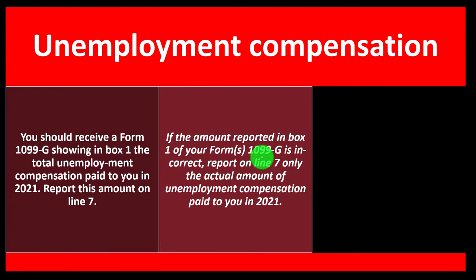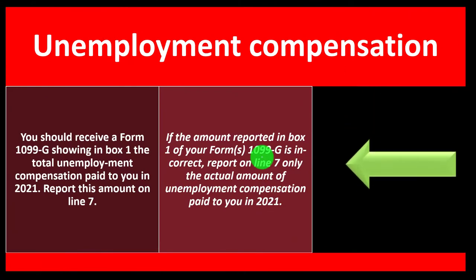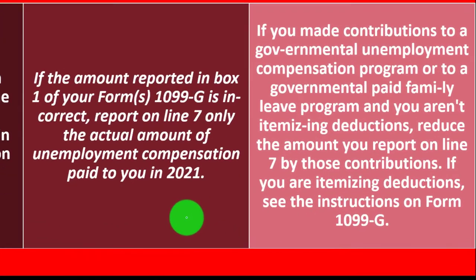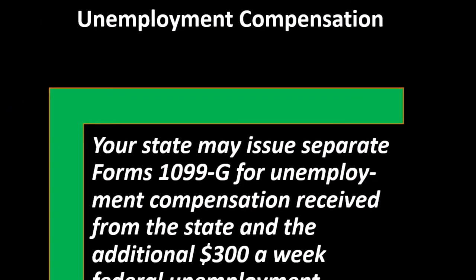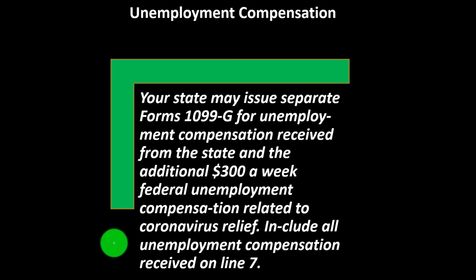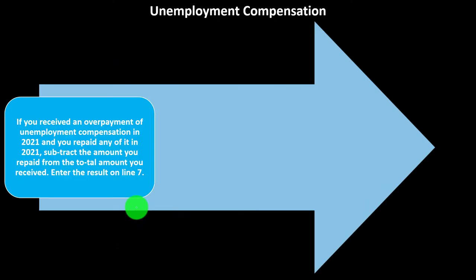The 1099-G is the biggest example of incorrect documentation we've seen in the last couple of years because of fraud and identity theft. If you made contributions to a government unemployment compensation program or a government paid family leave program and you aren't itemizing deductions, reduce the amount you report on Line 7 by those contributions. If you are itemizing deductions, see instructions on Form 1099-G. Your state may issue a separate Form 1099-G for unemployment compensation received from the state and the additional $300-a-week federal unemployment compensation related to coronavirus relief — include all unemployment compensation received on Line 7.